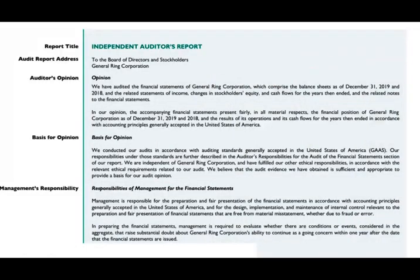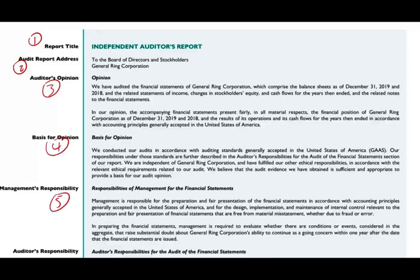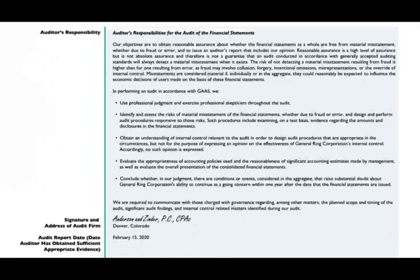First, we're going to look at the actual report that I went through in the prior session. I showed you the eight components: the report title, the audit report address, auditor's opinion, basis for the opinion, management responsibility, auditor's responsibility, the signature, and the audit report date. I went through and showed you what goes into each section of the report.